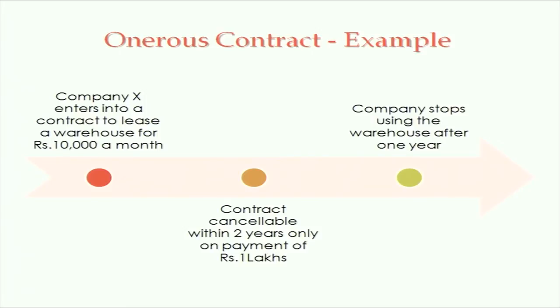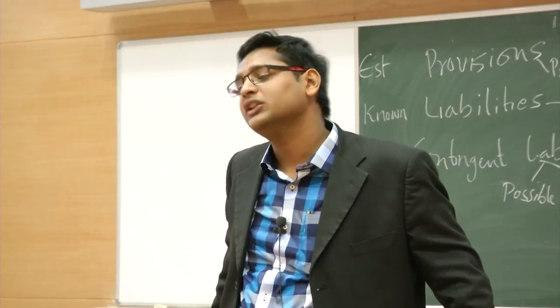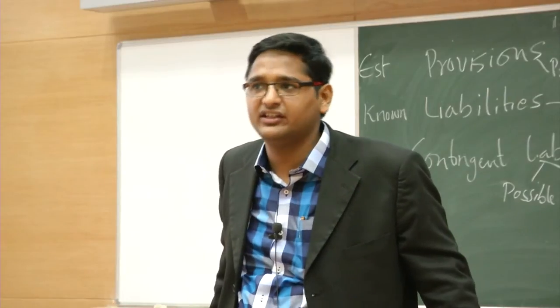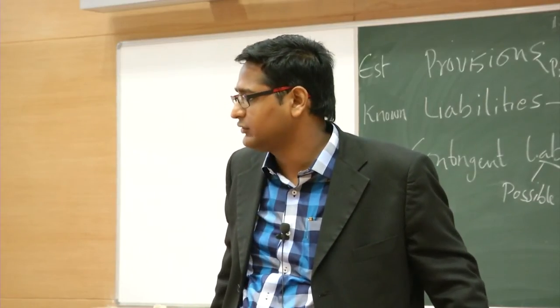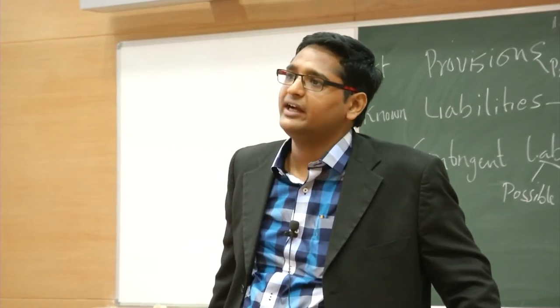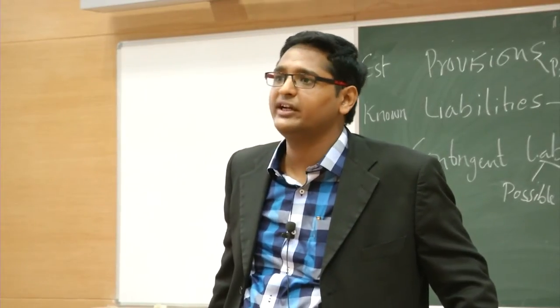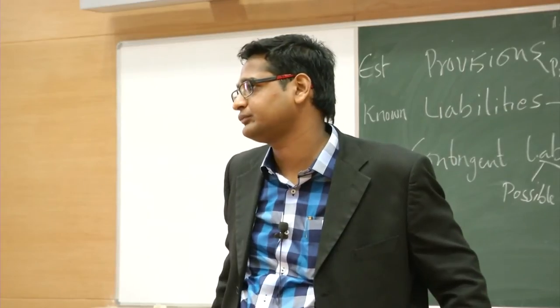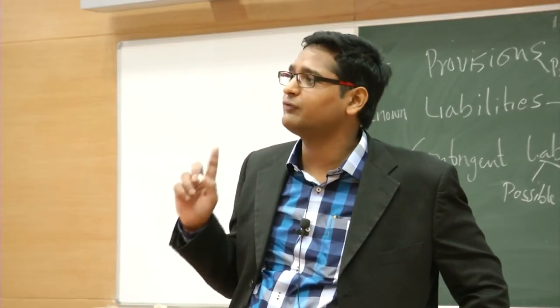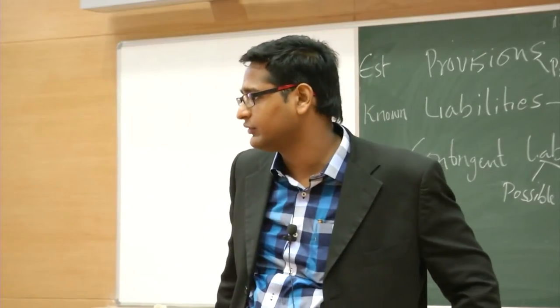An onerous contract should be treated as a loss in the year in which it becomes onerous. On 31st March, if I know I am not going to use it next year, it has become an onerous contract. Whatever is the minimum obligation — the unavoidable cost — should be recorded as loss immediately on 31st March. In this case, the unavoidable cost is 1 lakh rupees. I can cancel the contract for 1 lakh — I need not pay 1,20,000 rupees over the remaining year. So 1 lakh should be booked as loss immediately.